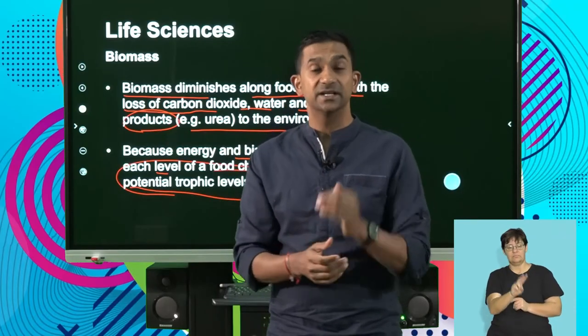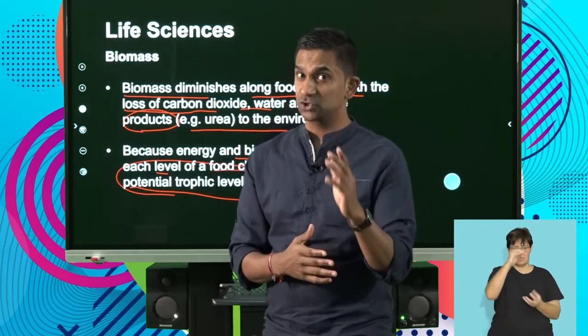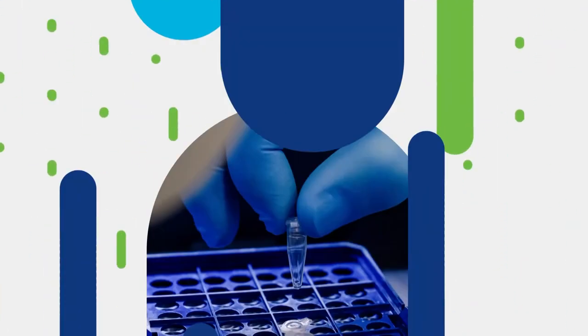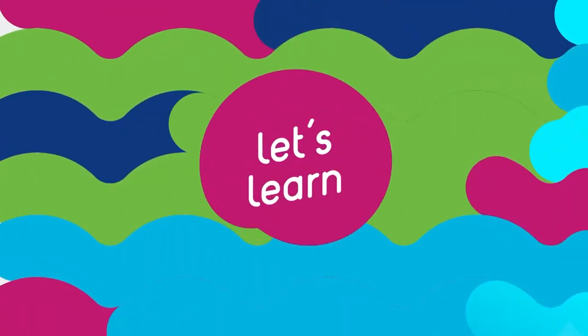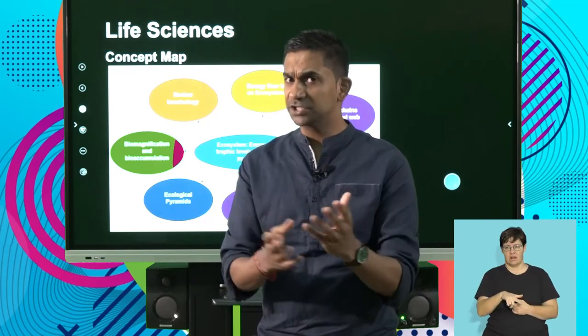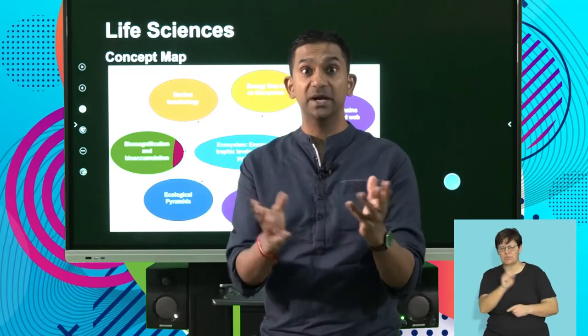In this segment, we've looked at energy flow, biomass as a concept, and placing organisms at trophic levels. Welcome, Life Science Learners, to the next segment. We've been looking at food chains and energy flow, and now we're going to focus on ecological pyramids — what they are, what they represent, and the different types.